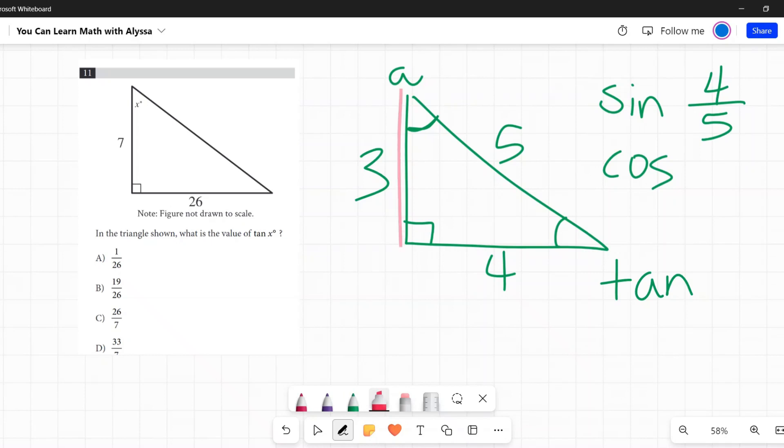Cosine is the adjacent to that angle, that angle A, over the hypotenuse. So it would be, put it in green, 3 over 5.